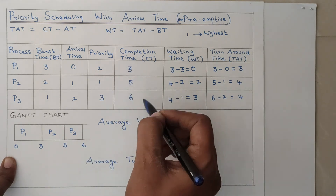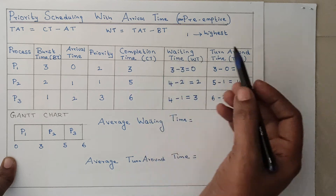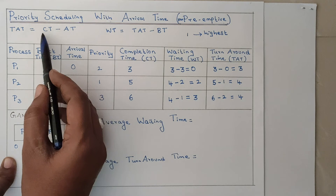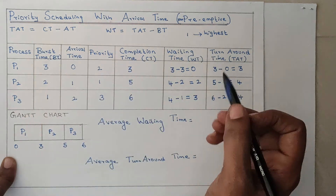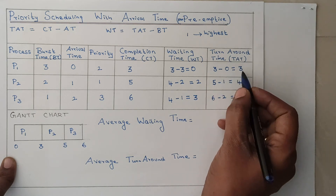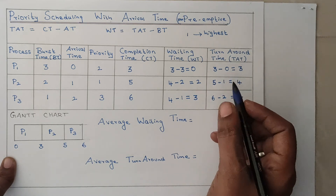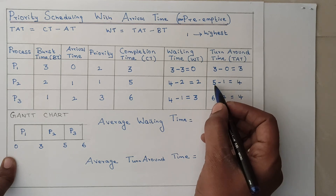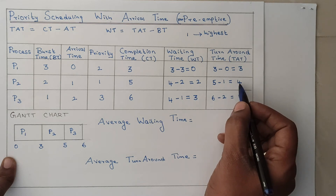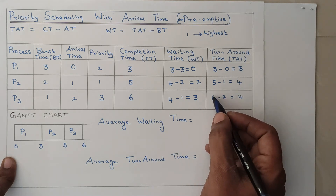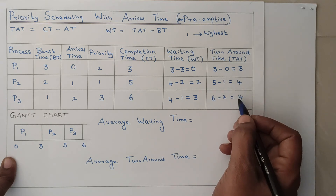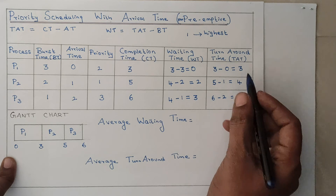Once completion time is calculated, we calculate the turnaround time. The formula is: turnaround time = completion time minus arrival time. For P1: 3 minus 0 equals 3. For P2: 5 minus 1 equals 4. For P3: 6 minus 2 equals 4.